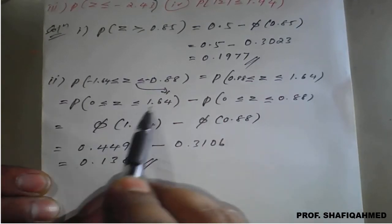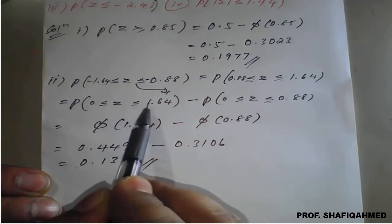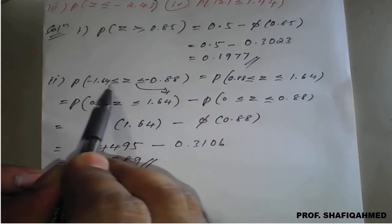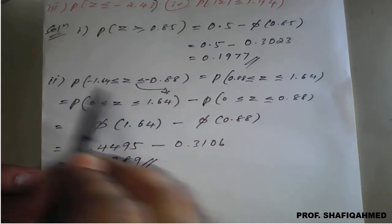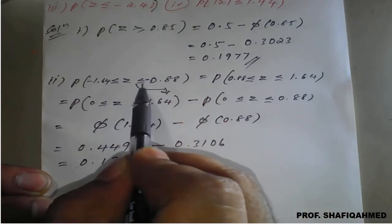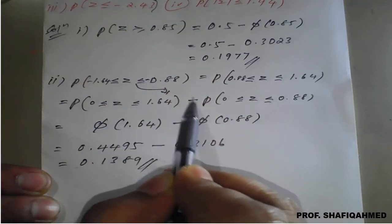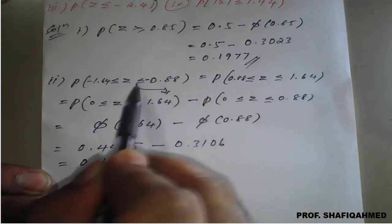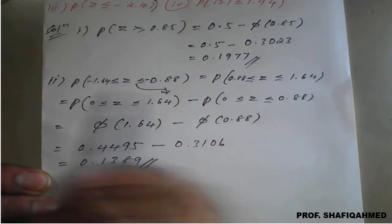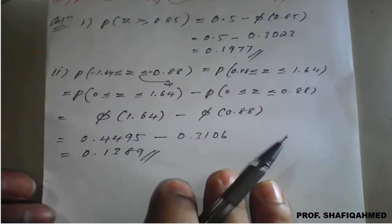One clarification: I took z greater than equal to 0 and less than equal to the positive value. Because of the minus sign in the original expression, the greater-than becomes a less-than when shifted. The minus sign updates the inequality, which is why a minus appears in the subtraction step rather than a plus.